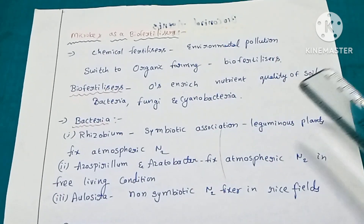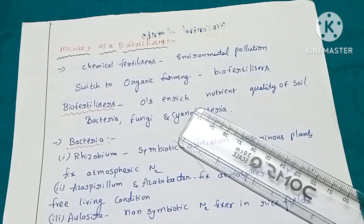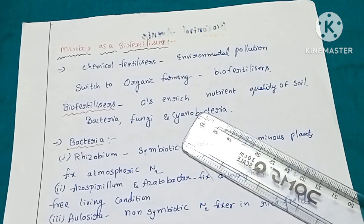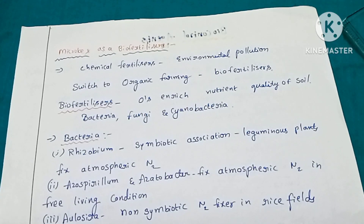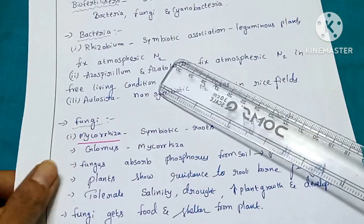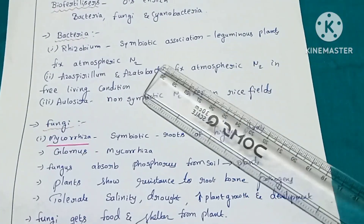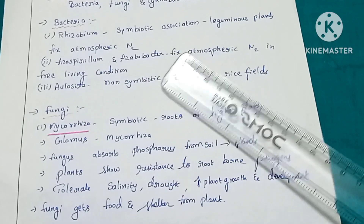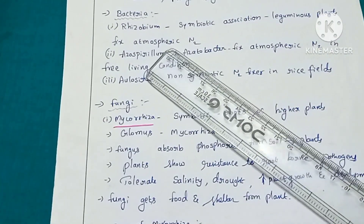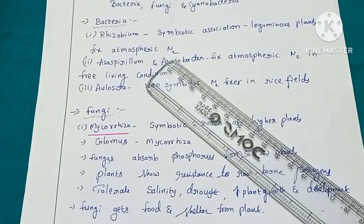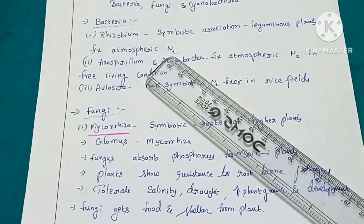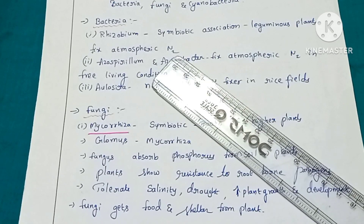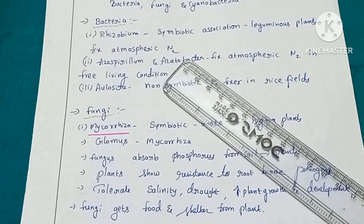Biofertilizers use organisms to enrich the nutrient quality of the soil, using bacteria, fungi, cyanobacteria, and different microorganisms. The most familiar bacteria used as a biofertilizer is Rhizobium. Rhizobium forms a symbiotic association with the root system of leguminous plants and fixes atmospheric nitrogen.